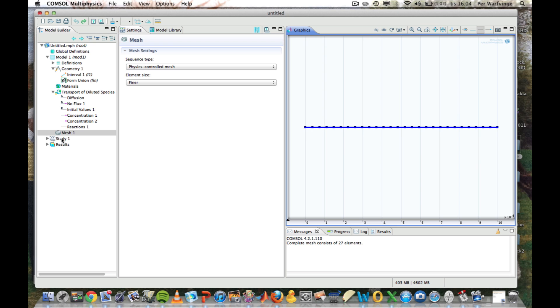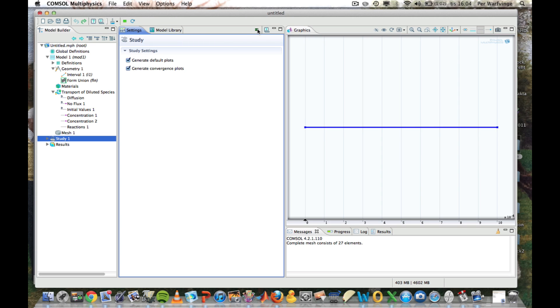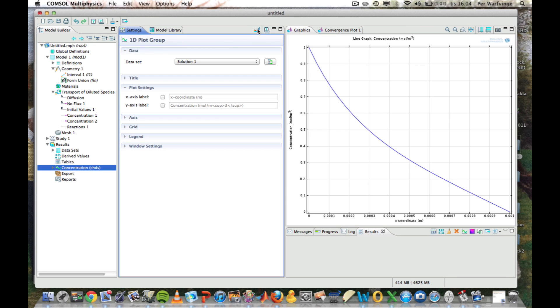Having done that, it's time to study. And by default, we get the concentration plot. And as we see, the concentration is 1 at the left boundary and 0 at the right boundary. 0 right here, and 1 right there.